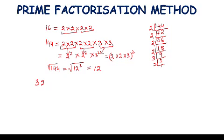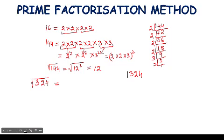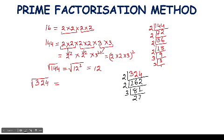Let's take another example: three hundred twenty-four. We find the prime factors of 324. It is divisible by two: 324 ÷ 2 = 162, 162 ÷ 2 = 81. It is not further divisible by two, so we divide by three: 81 ÷ 3 = 27, 27 ÷ 3 = 9, 9 ÷ 3 = 3, 3 ÷ 3 = 1.